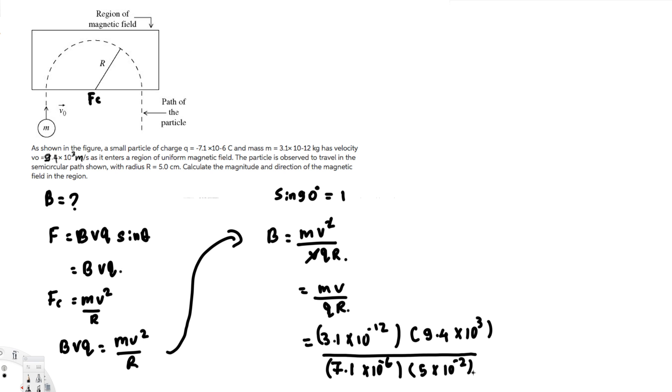If you calculate this value, you get 0.0833 Tesla. This is the magnetic field. For the direction, since this is a negative charge, the direction is into the page, shown by a cross symbol.